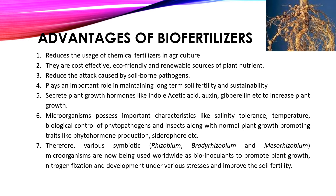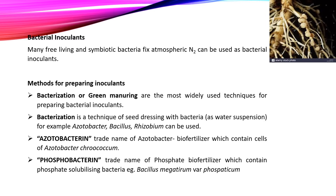To improve soil fertility, bacterial inoculants are used. Many free-living and symbiotic bacteria supply nitrogen and can be used as bacterial inoculants. There are many methods for preparing inoculants. The first is bacterization or green manure, which is the most widely used technique. Bacterization is a technique of seed dressing with bacteria where water is used as a suspension.